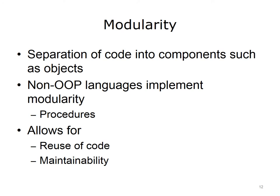Modularity is the separation of code into individual components. Objects provide modularity in OOP languages, but non-OOP languages support modularity too. Procedures, subroutines, and functions are all examples of modules in code. The purpose of modularity is to organize the code into separate components, each of which accomplishes a particular task. This allows for code reuse — the component is defined once but can be called many times. Also, when the program is divided into components, it is easier to maintain and comprehend the code. Any changes to one component will have minimal effects on others. If changes to the program are required, it is easier to identify which component needs to be modified, since each component has its own purpose. For example, if the format of a program's output is incorrect, the programmer would know to look at the component that produces output.